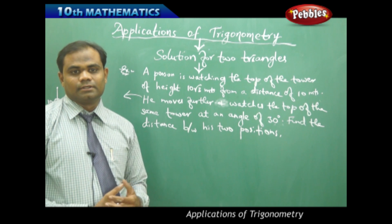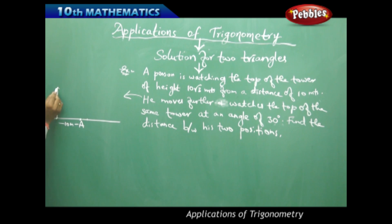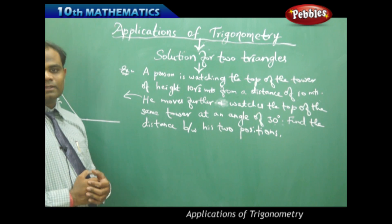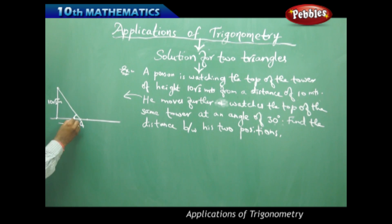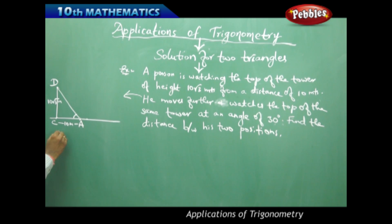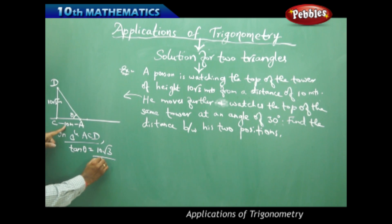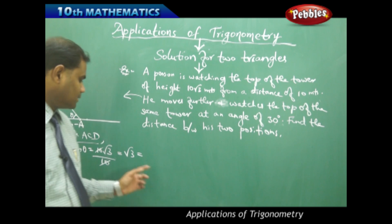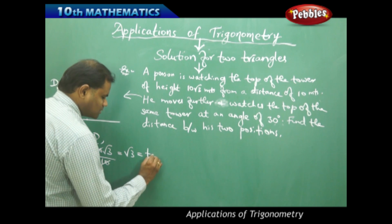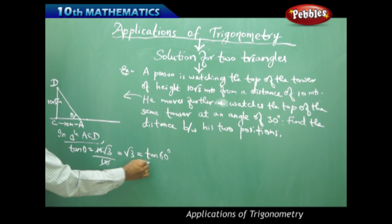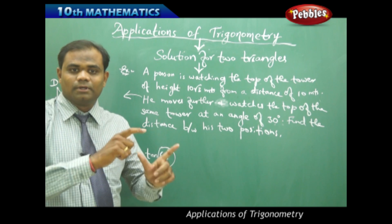How do we identify this mathematically? Since the person is watching the top of the tower from A, let's find the angle at A. In triangle ACD, if I take tan theta, then tan theta equals opposite over adjacent, which is 10 root 3 over 10, giving root 3. From the trigonometric table, tan 60 is root 3. Therefore, the angle theta at A is 60 degrees.